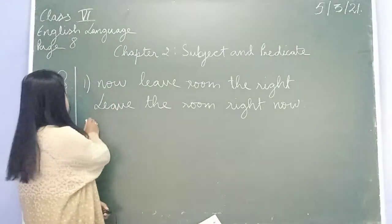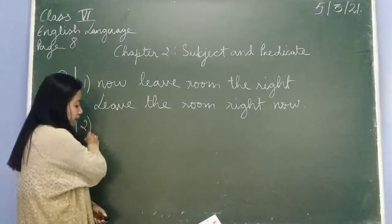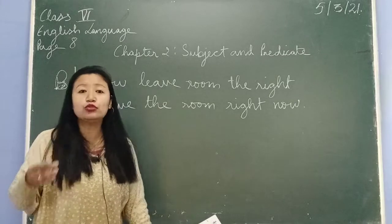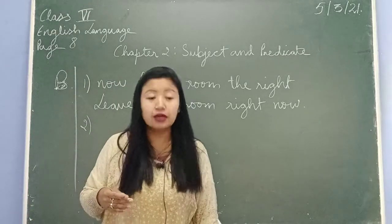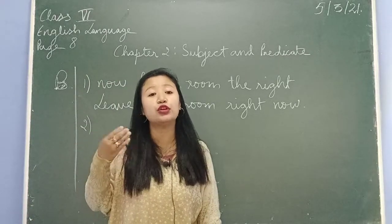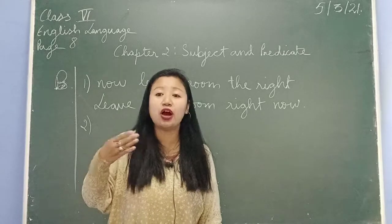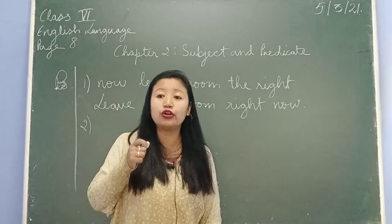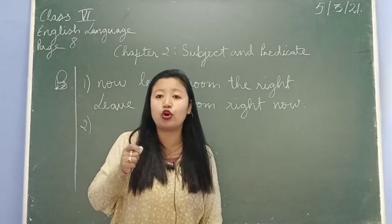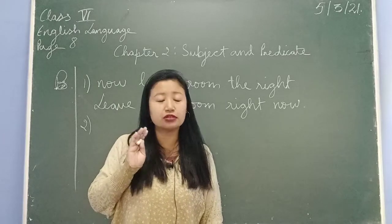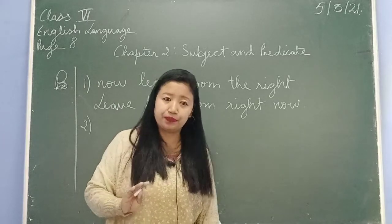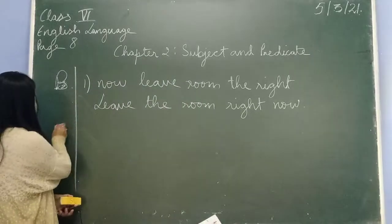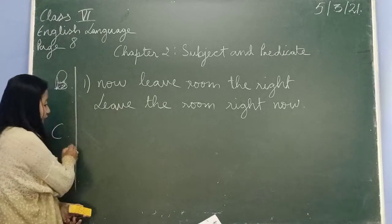So I want you to do numbers 2 to 10. Do it first in your rough copy. After you do it and when I give you the answers, cross-check your answers, and then do it in your fair language copy. Now I also want you to do Exercise C. I'll just show you one example — provide the meaningful subjects or predicates for these sentences.